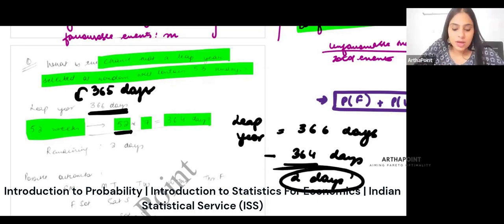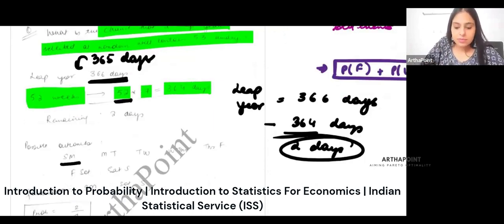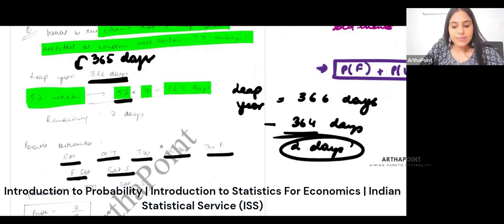Of the year, these two days can be Sunday-Monday, Monday-Tuesday, Tuesday-Wednesday, Wednesday-Thursday, Thursday-Friday, Friday-Saturday, Saturday-Sunday. Now absolutely it will be 2 by 7. So now we have to check where exactly you are getting Sunday.